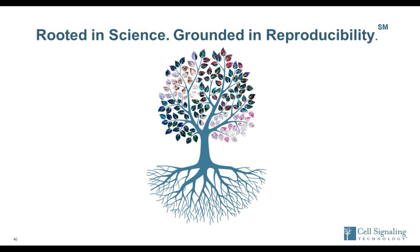Q: I work in a preclinical setting with mouse models. Can you describe how to get around mouse-on-mouse cross-reactivity issues? A: Most of our primary antibodies for mouse-reactive targets are raised in rabbit. When using rabbit antibodies in mouse tissues, you won't see any mouse-on-mouse reactivity — unlike companies raising antibodies in mice, where the mouse secondary can react with IgG within mouse tissue. Using rabbit antibodies is also helpful in the multiplex setting with the tyramide-based assay, since multiple different rabbit antibodies can be used across rounds within mouse tissues.